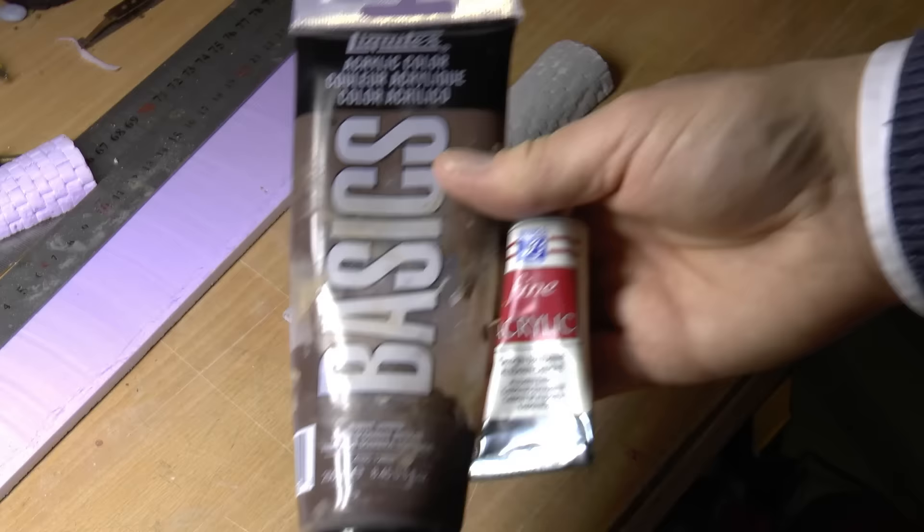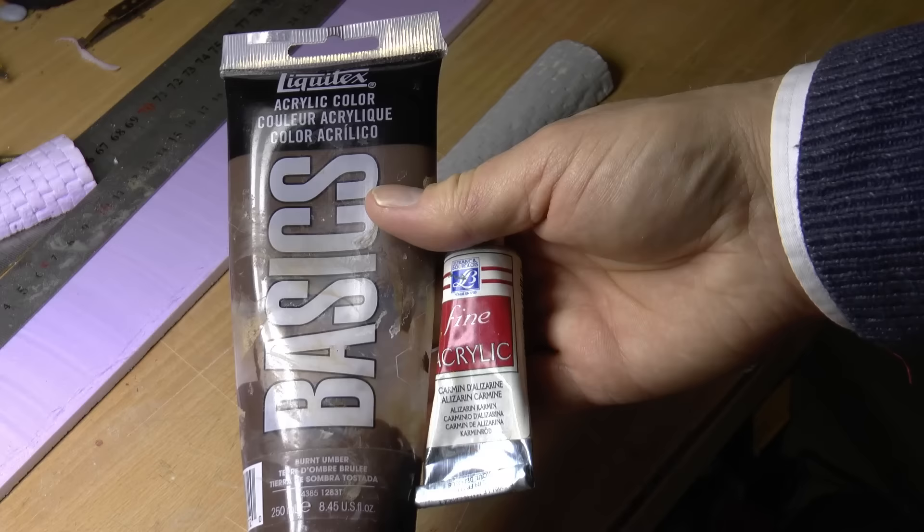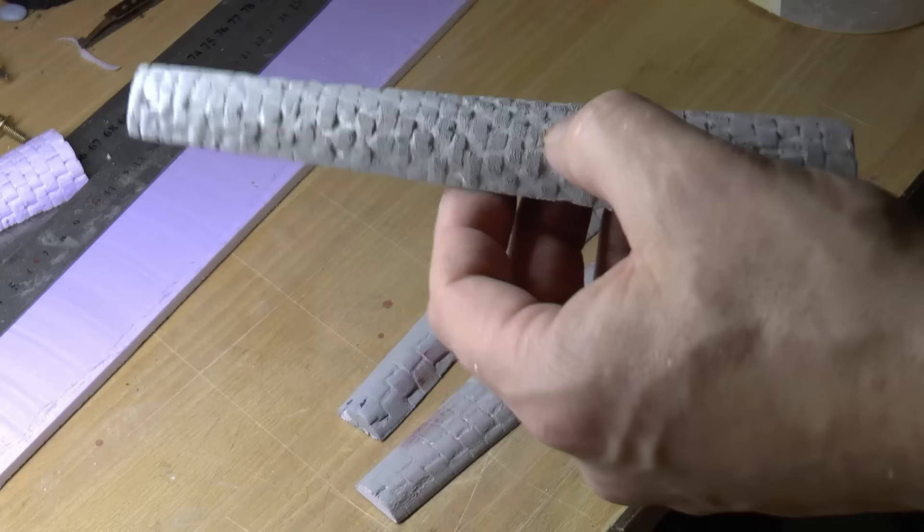On these support pillars, I will also add some detail. Same as I do on the mountains. This is burnt umber and a red acrylic color.